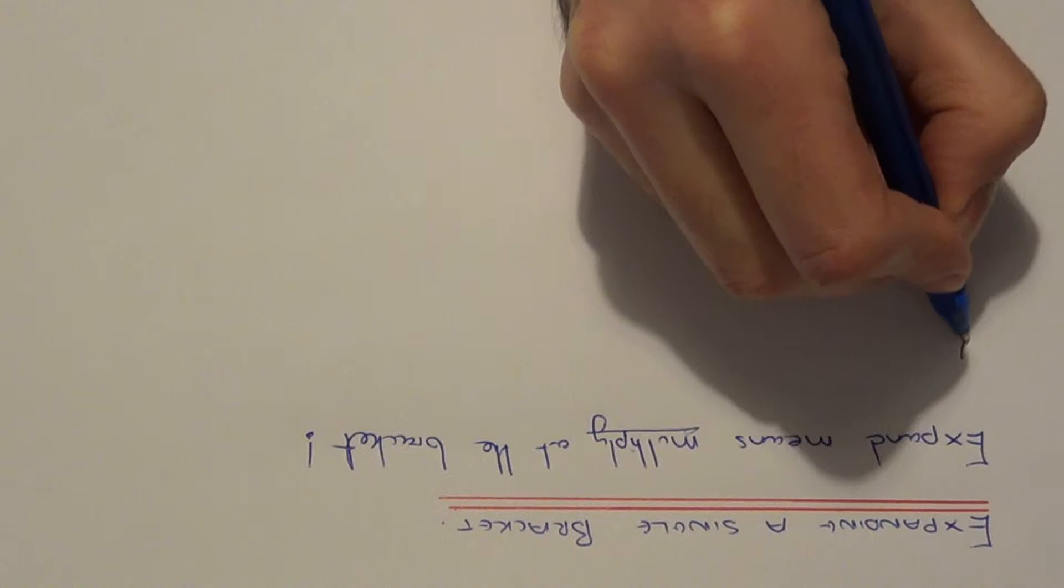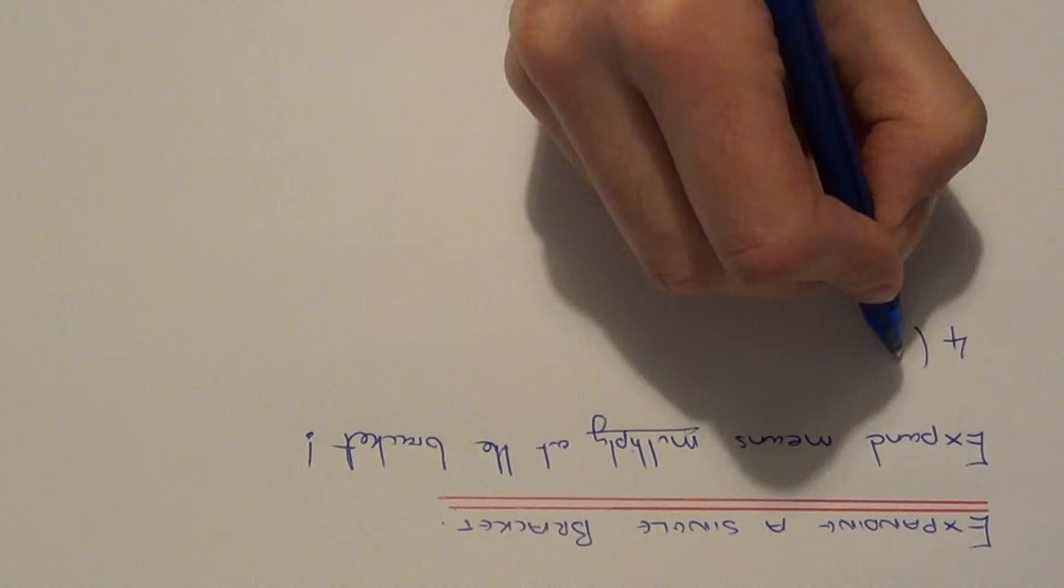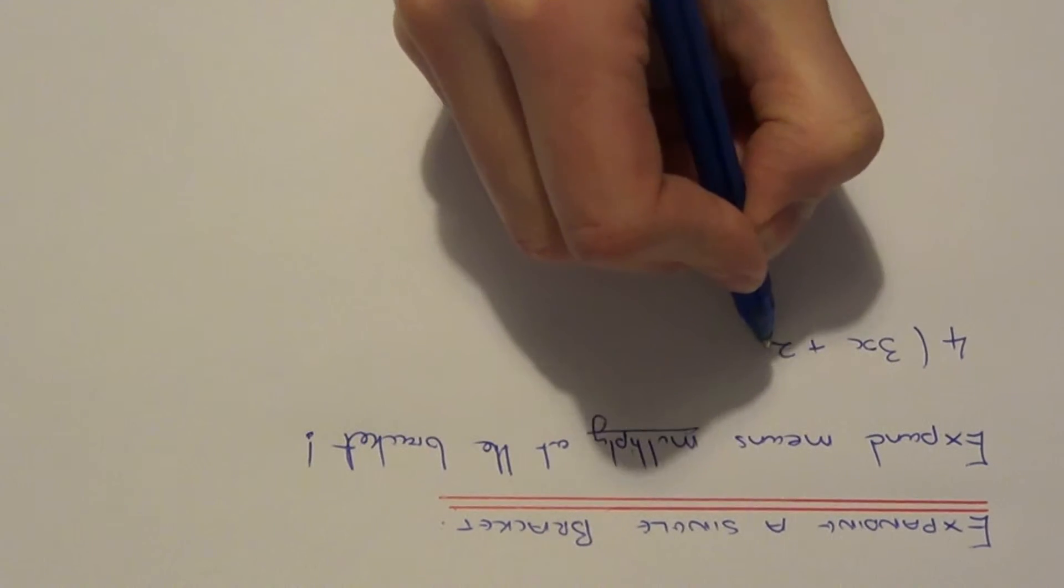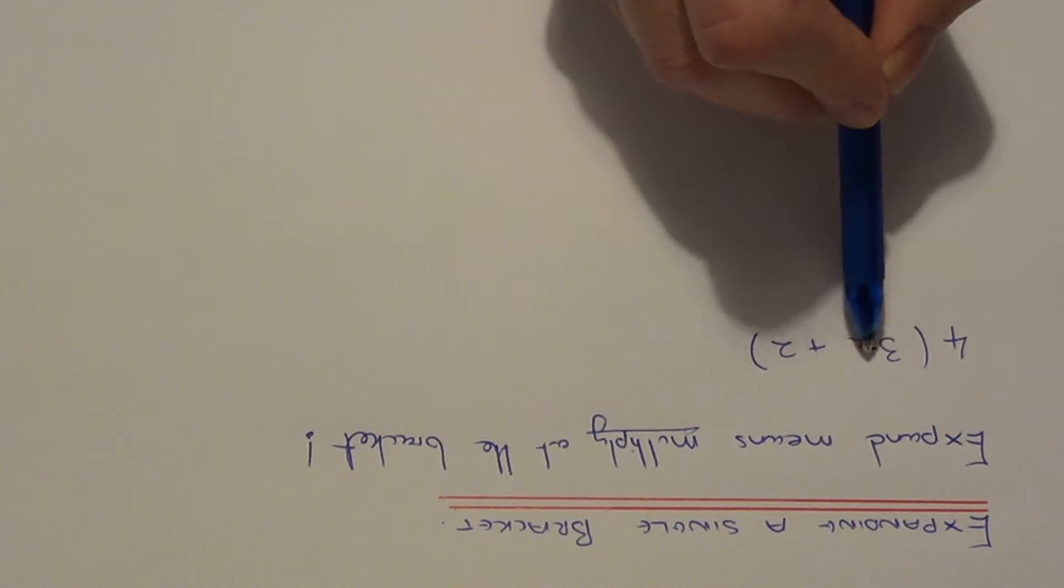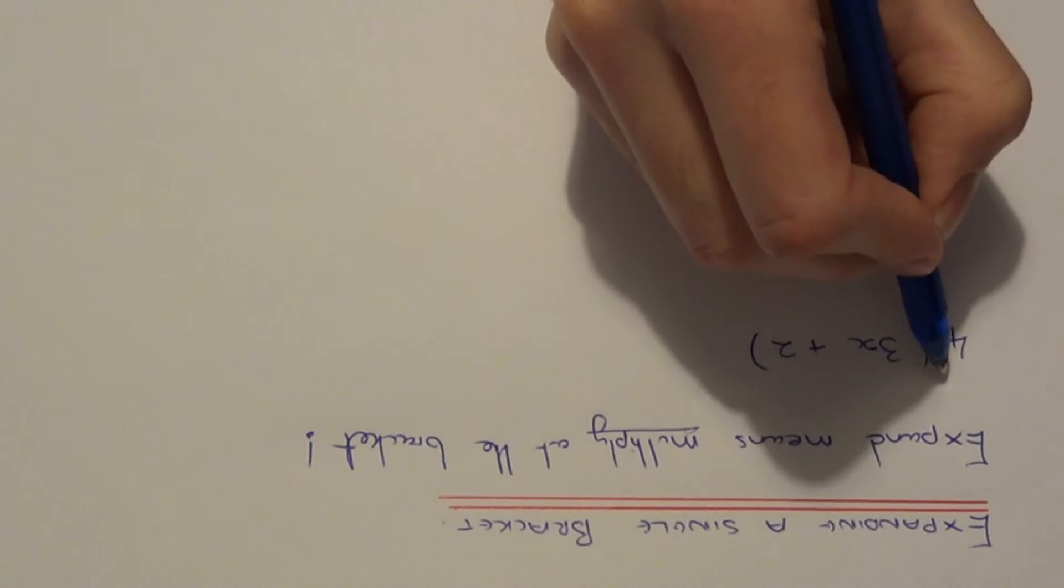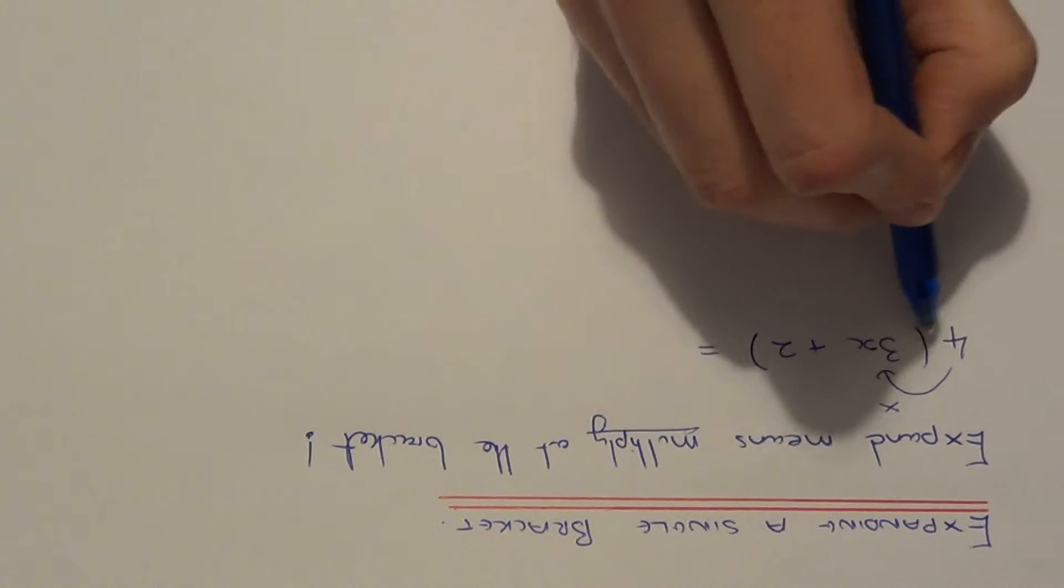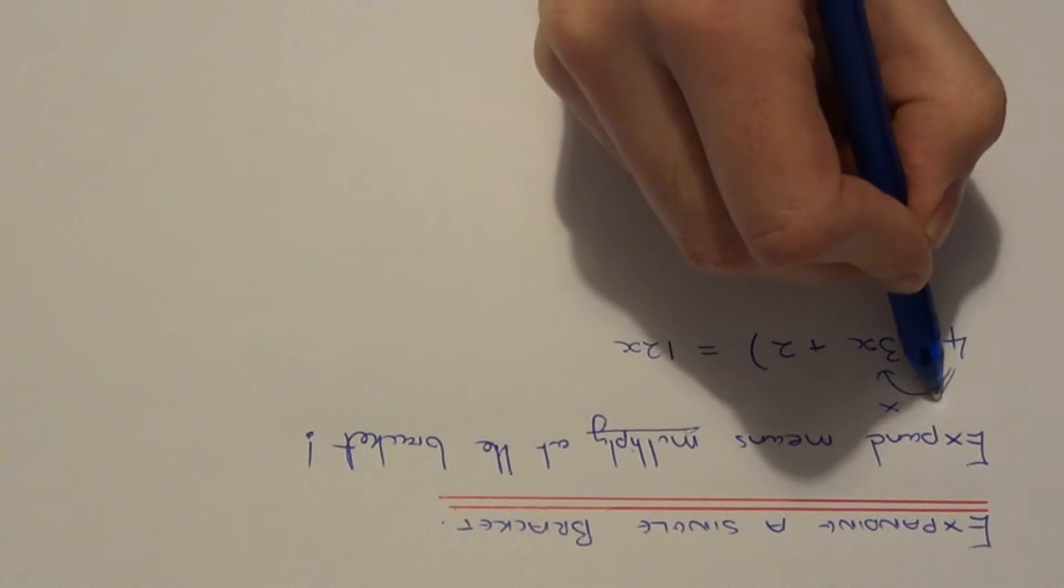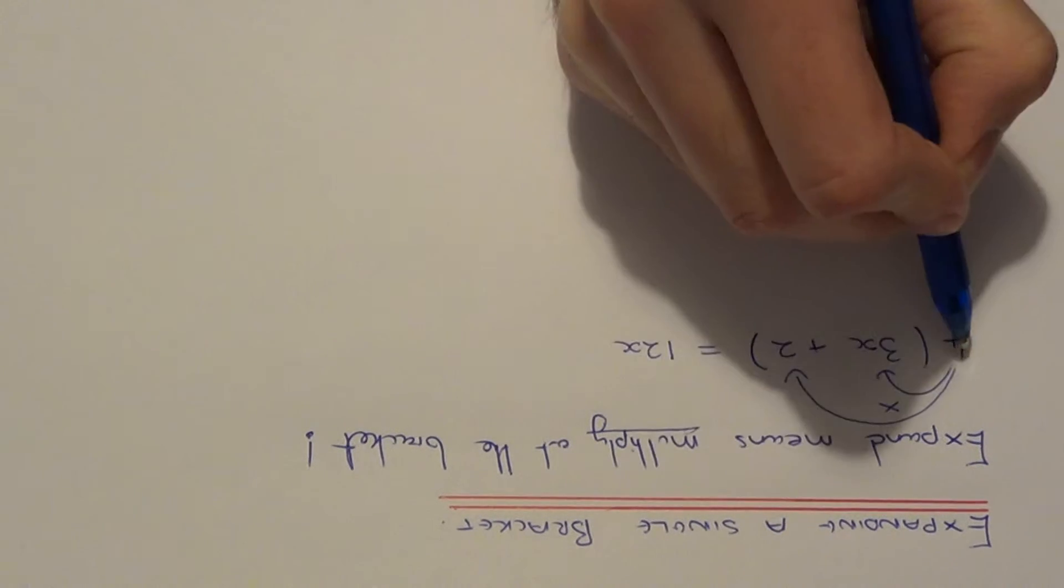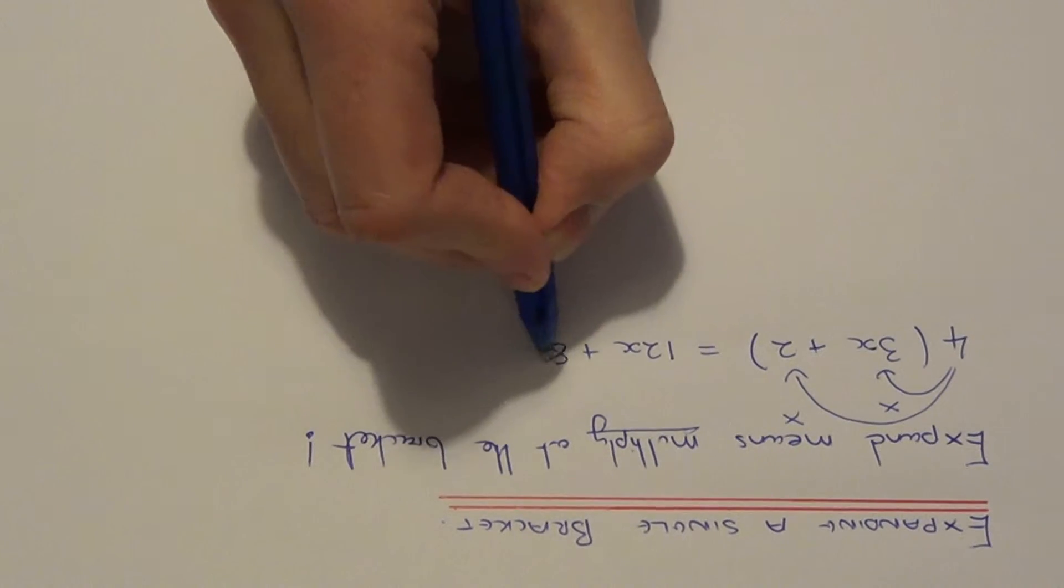So let's have a look as an example. We need to expand 4 bracket 3x plus 2. So this term at the start of the bracket needs to multiply both terms inside the bracket. So first of all you do 4 times 3x. 4 times 3x will be 12x. Again you need to then do 4 times the 2, so 4 times 2 is 8.